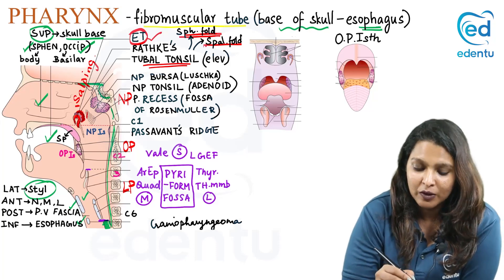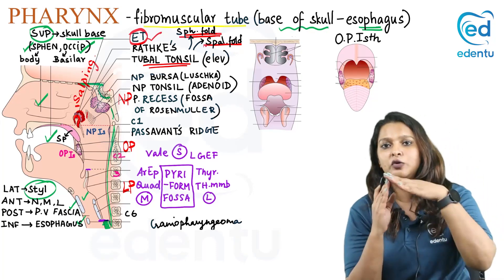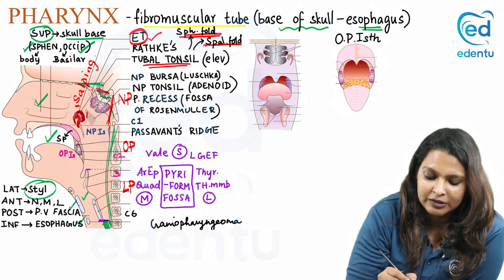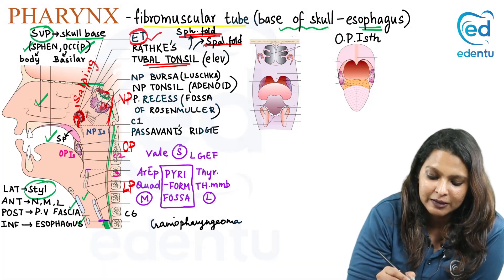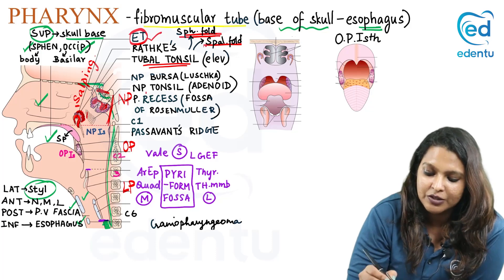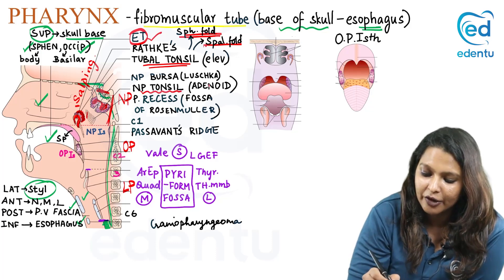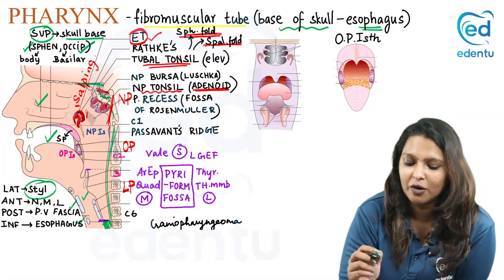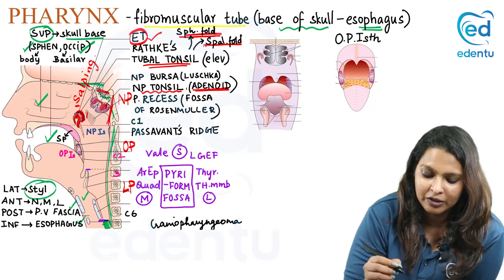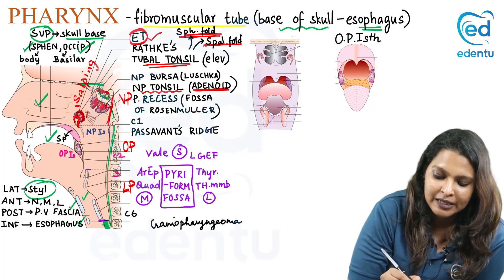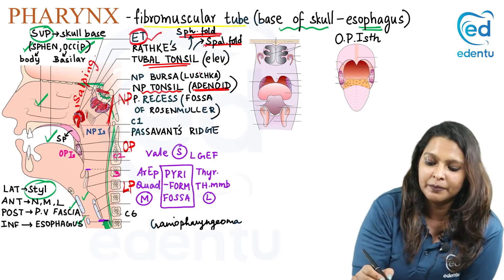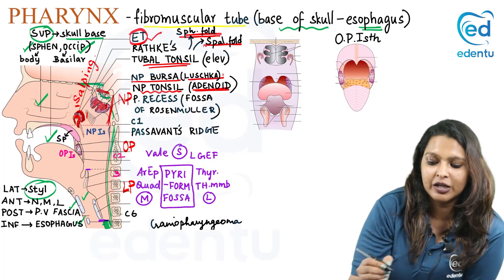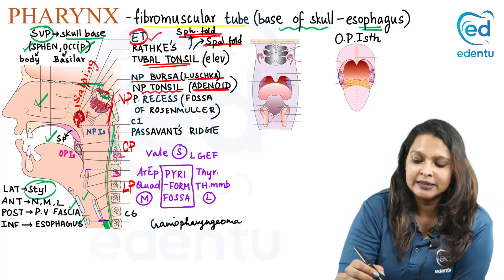Towards the roof of the nasopharynx, at the junction where the roof meets the posterior wall, there is another tonsil called the nasopharyngeal tonsil, also known as the adenoid. Inflammation of the nasopharyngeal tonsil is called adenoiditis, which is more common in children. In the nasopharyngeal tonsil there is a bursa — seen as an in-pouching — called the nasopharyngeal bursa or bursa of Luschka (L-U-S-C-H-K-A).